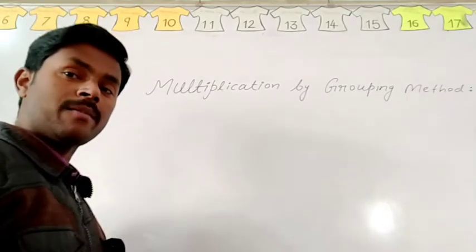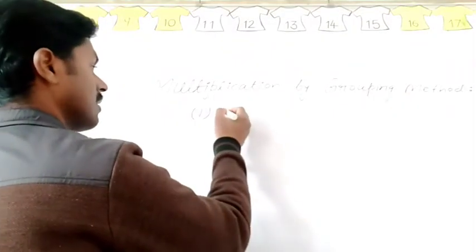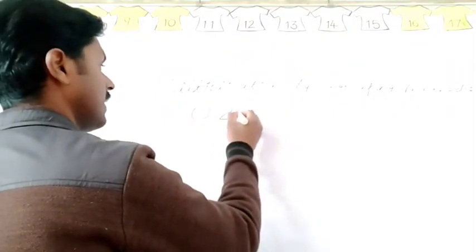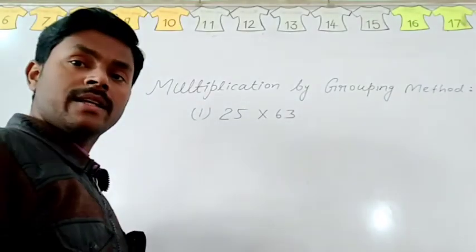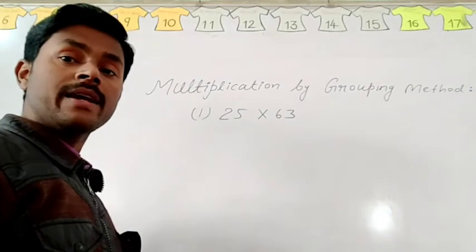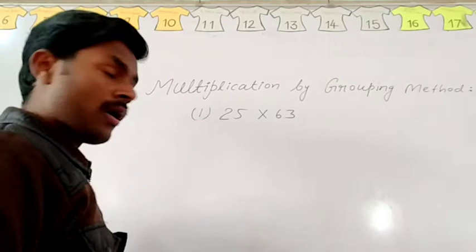Suppose you have to multiply two numbers and these numbers are 25 and 63. Then how will you multiply with grouping method? Now let's learn about this.